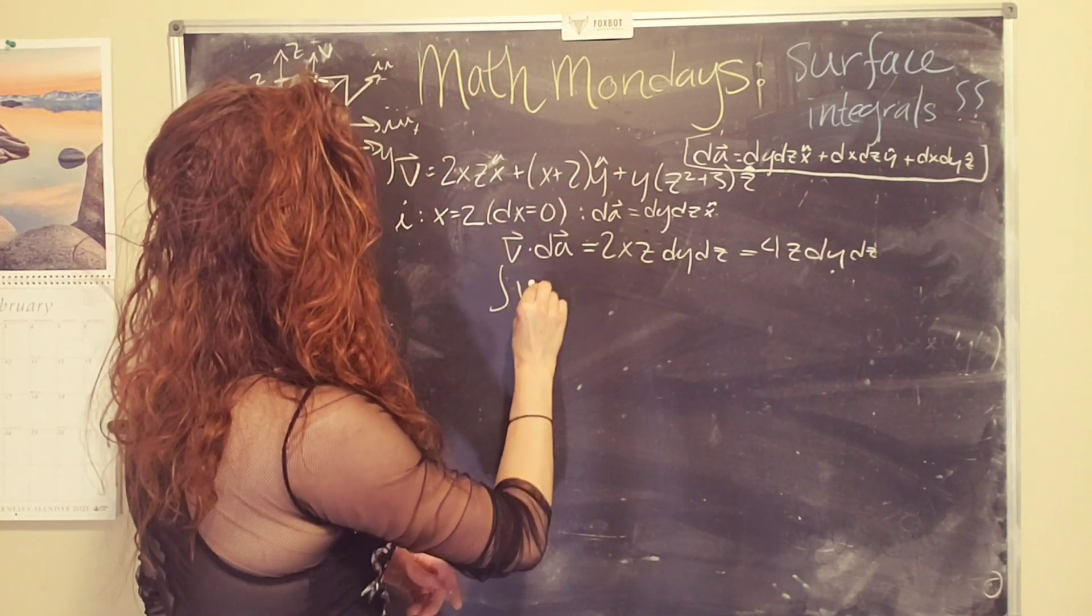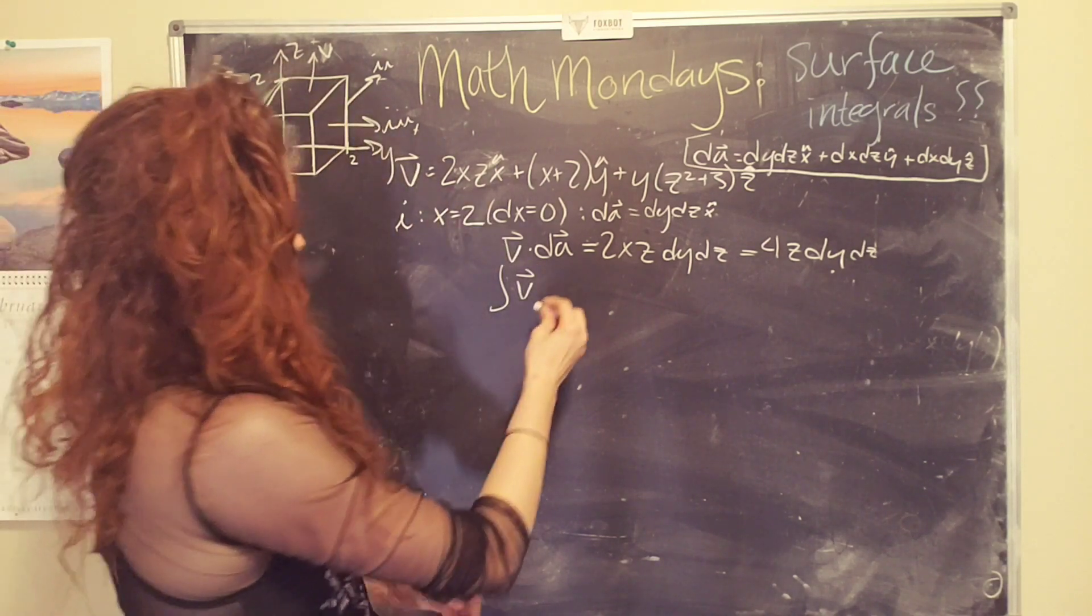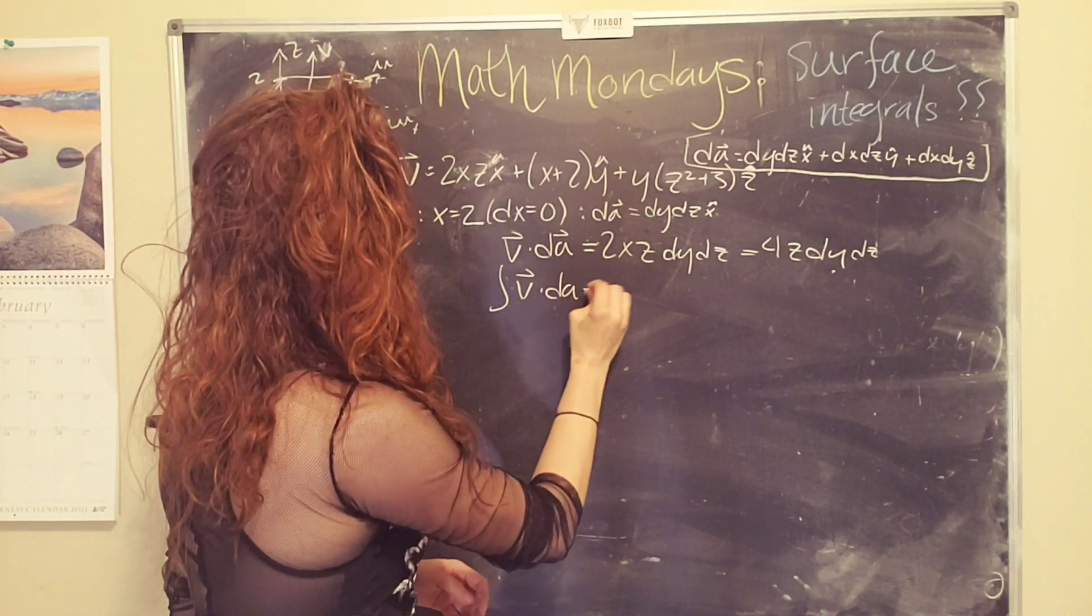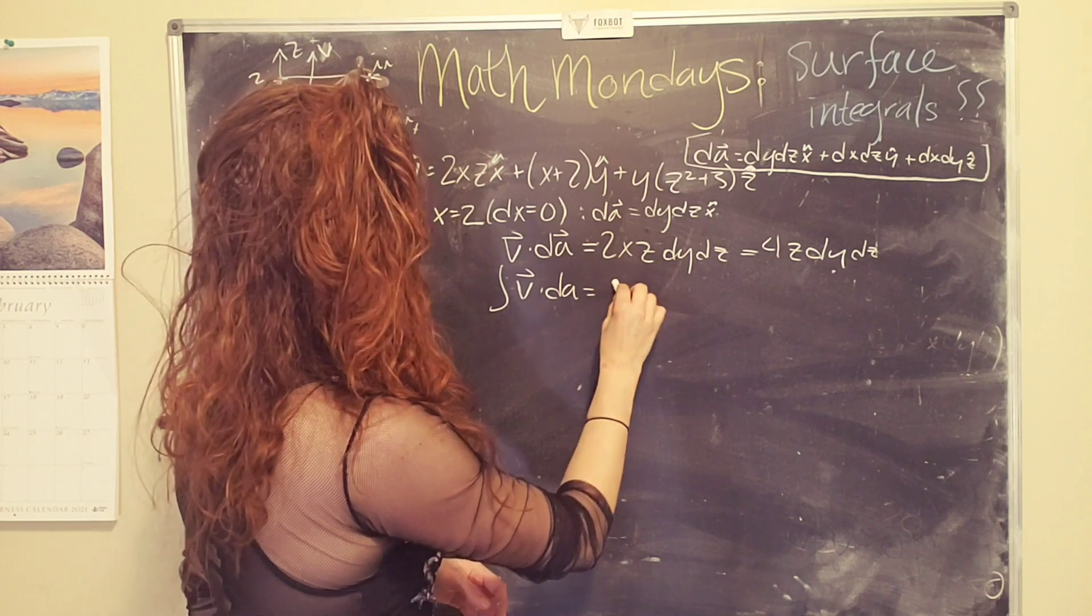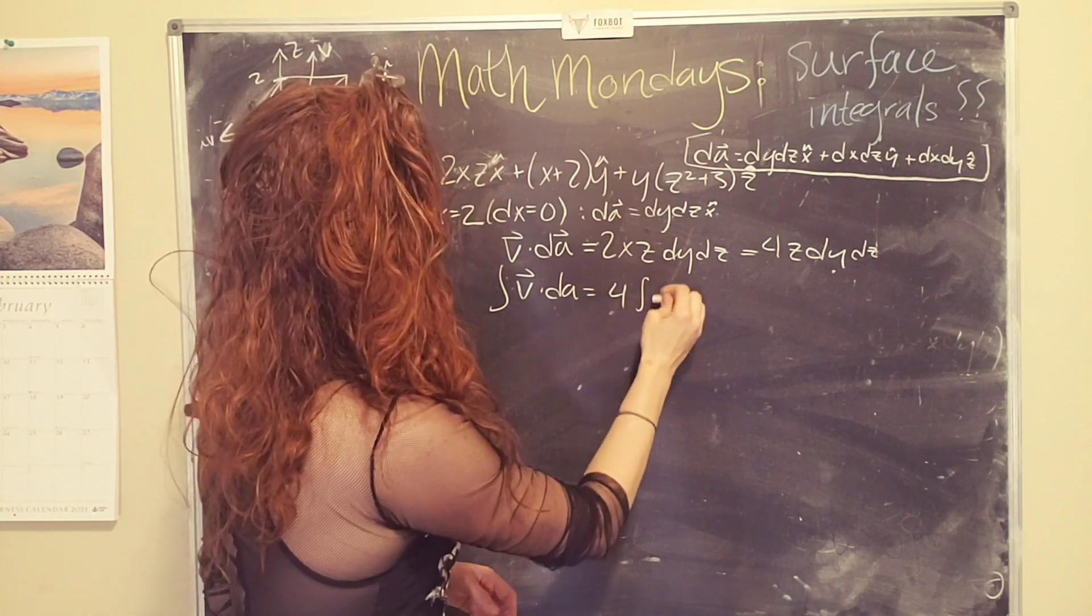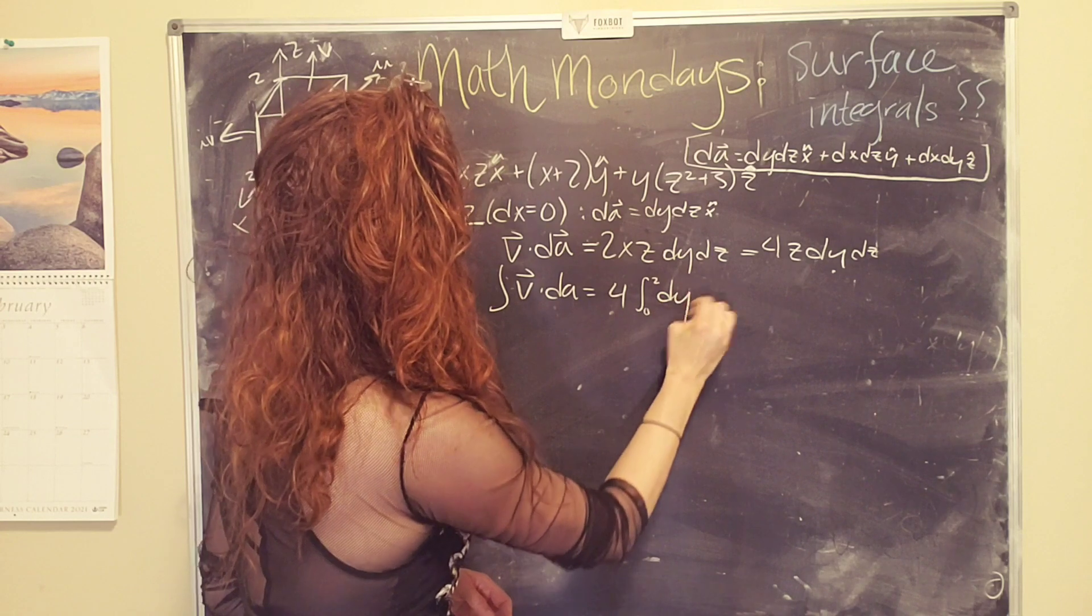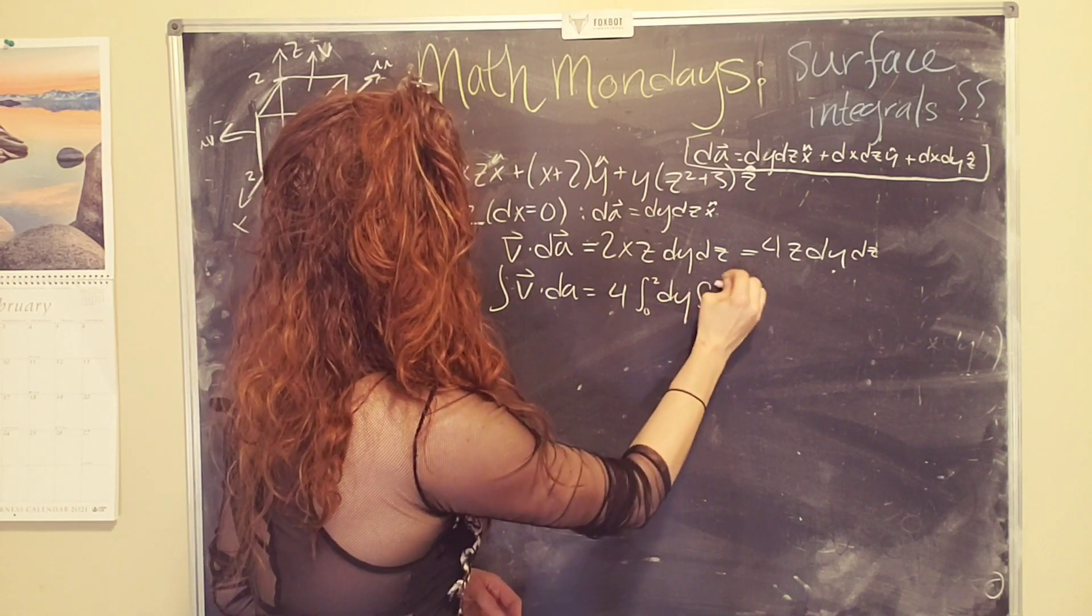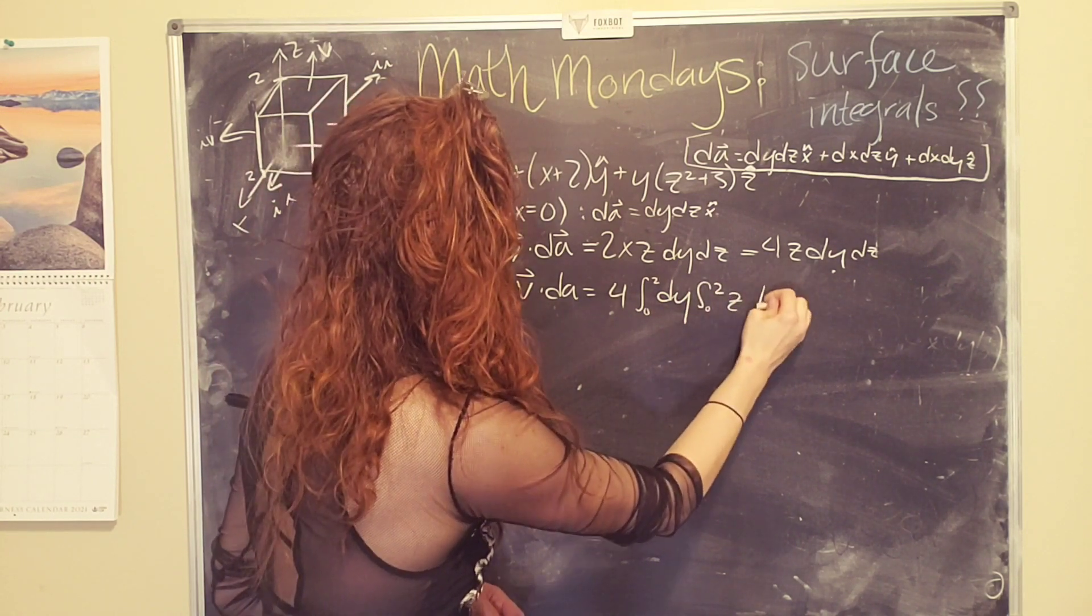And then my integral becomes, over this first surface, v dot dA. We can pull the four out. So we'll get four and we'll do the easier one first. So, y goes from zero to two dy and then z also goes from zero to two z dz.